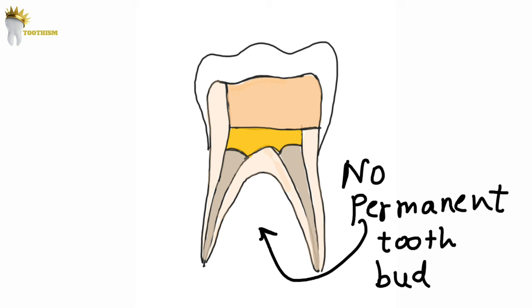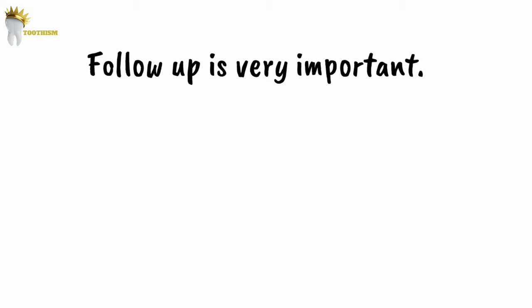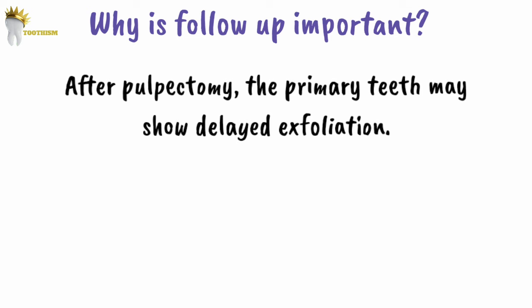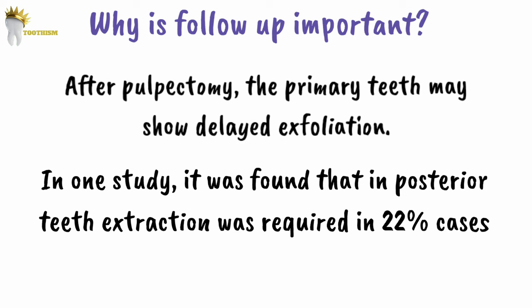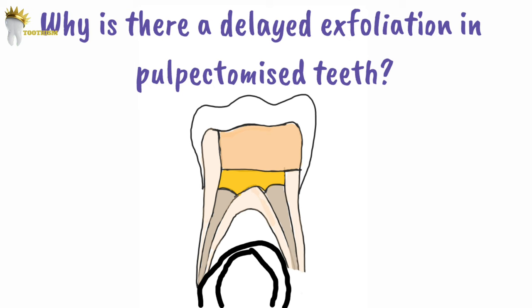If a primary tooth that requires pulpectomy has no permanent successor, we need to retain it long-term, in which case gutta percha can be used as the obturating material. After pulpectomy, periodic recall is very important because primary teeth may show delayed exfoliation and might require extraction. In one study, extraction was required in 22% of posterior cases because of ectopic eruption of premolars or difficulty in exfoliation of the treated primary molar. After normal physiologic resorption of the roots reaches the pulp chamber, the large amount of zinc oxide eugenol present may impair the resorptive process and lead to prolonged retention of the crown. Treatment in such cases usually consists of simply removing the crown and allowing the permanent tooth to complete its eruption.